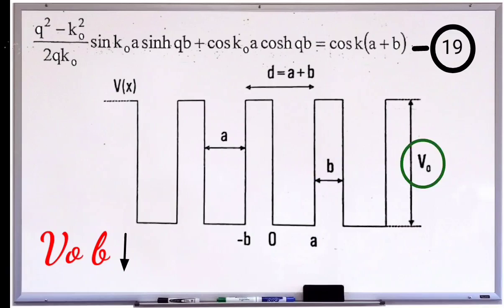If V₀ is very high, then b should be very small, so that the term V₀b will be finite, so that the electrons can easily tunnel through the barrier.